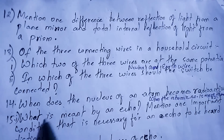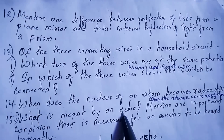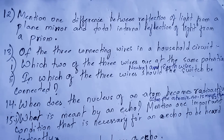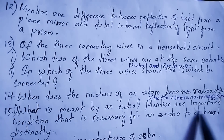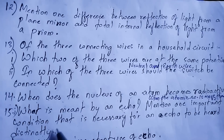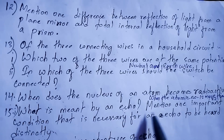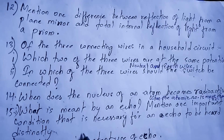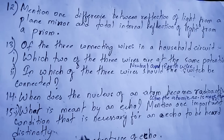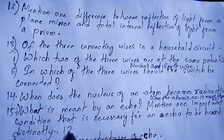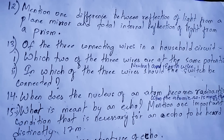Next question: what is meant by an echo? An echo is the reflection of a sound wave when it strikes a rigid surface. One important condition necessary for an echo to be heard distinctly is that the minimum distance between the source of sound and the reflector must be 17 metres.